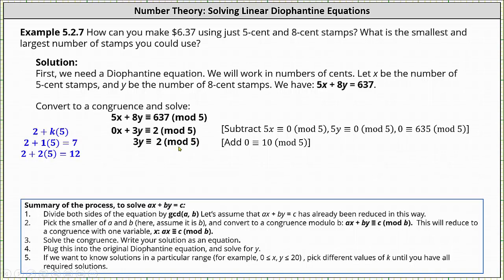From here, we want to solve for y by dividing both sides by three. However, two is not a multiple of three because we have modulus five. We now add multiples of five to two until we have a multiple of three, and I've shown the work here on the left. Notice if we add two multiples of five to two, we get 12, and 12 is a multiple of three, or divisible by three.